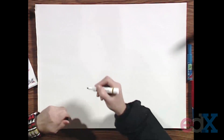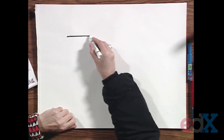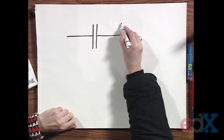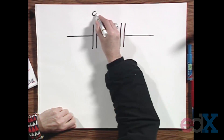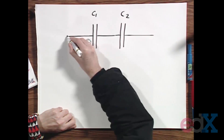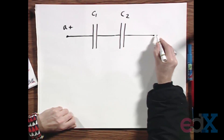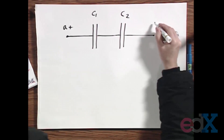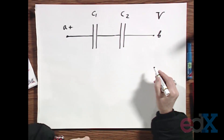If now we go to series — here we have two capacitors in series, C1 and C2, point A at positive potential, point B at zero, negative potential. And again, V_A minus V_B is V.